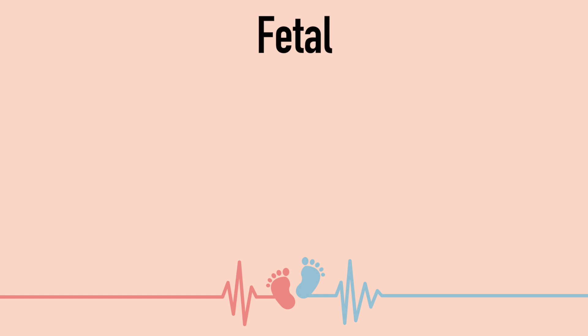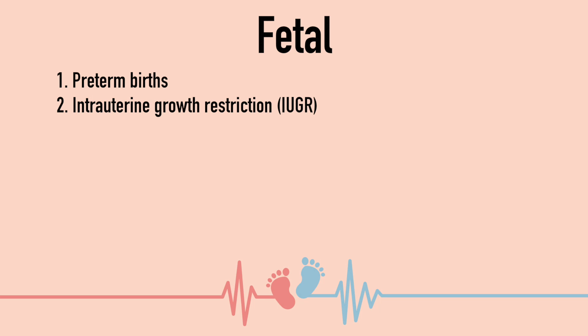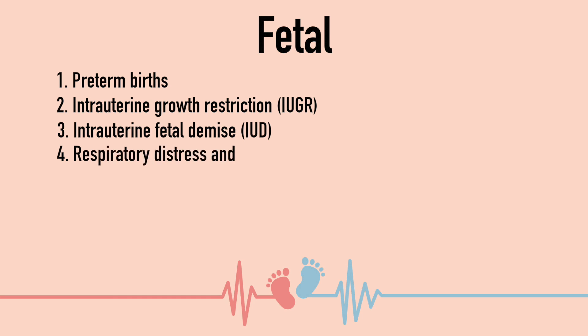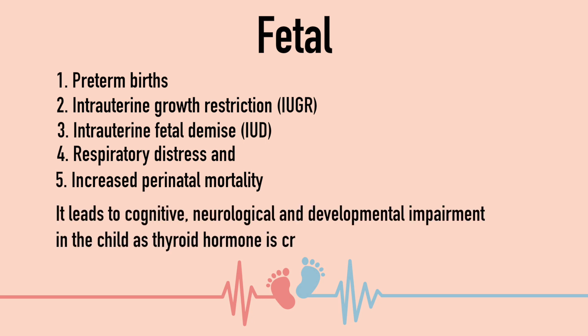What are the fetal implications of maternal hypothyroidism? There is an increased risk of preterm birth and associated prematurity morbidity. The baby may develop intrauterine growth restriction (IUGR). In severe cases, intrauterine death of the fetus may also occur. At delivery, birth asphyxia and respiratory distress can occur. Because of these risks, there is an increased overall perinatal mortality. Importantly, thyroxine is critical for fetal brain development, so children may later show cognitive, neurological, and developmental impairment.